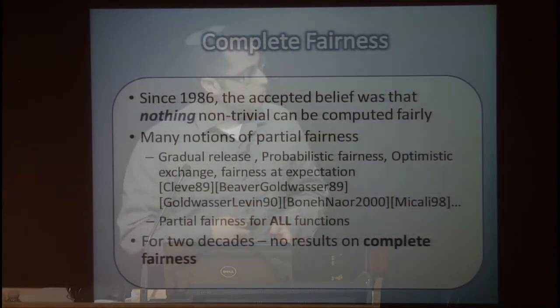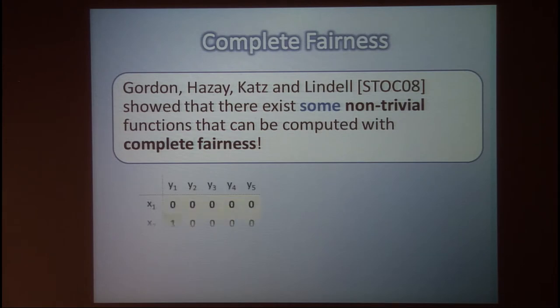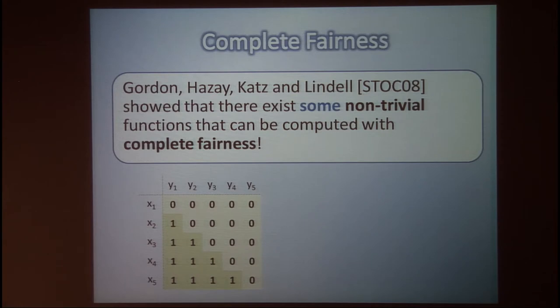For two decades there were no results on complete fairness, until 2008 Gordon, Hazay, Katz, and Lindell — which I'll call GHKL — showed that there exist some non-trivial functions that can be computed with complete fairness. Specifically, they showed that the greater-than function, or the Millionaires' problem, and for domain size two the Boolean OR and Boolean AND functions, can be computed fairly.